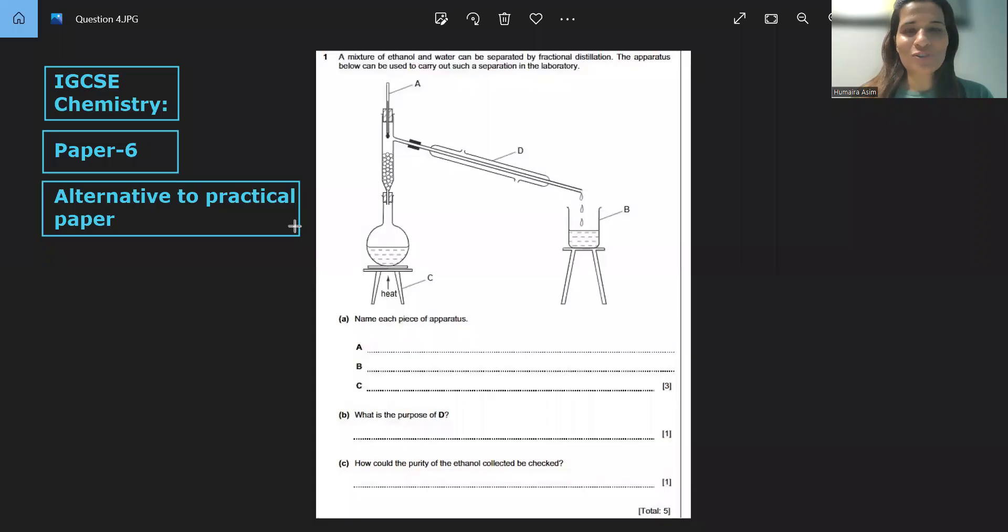Hi, we are going to discuss IGCSE Chemistry Paper 6, which is the Alternative to Practical Paper and very important. This actually contains 20% of the final grade, so that is really important.